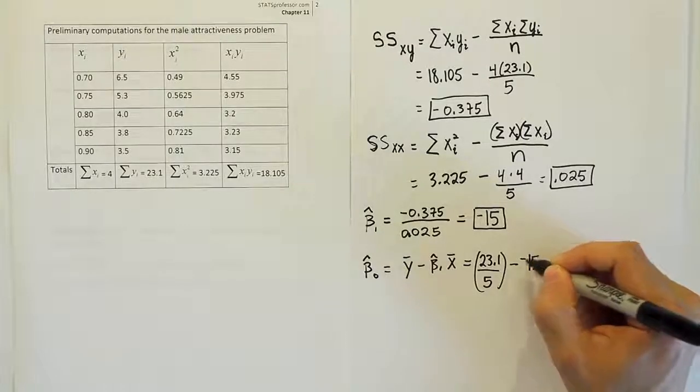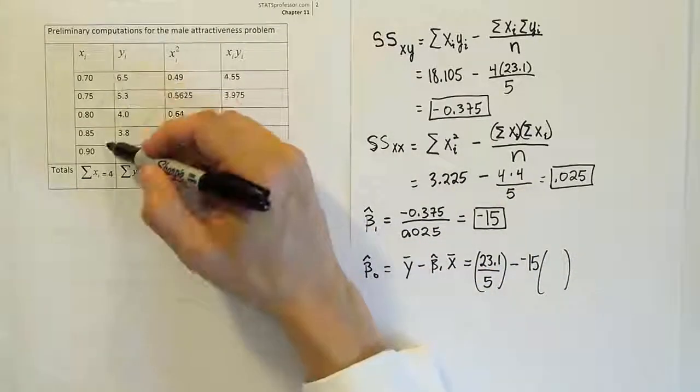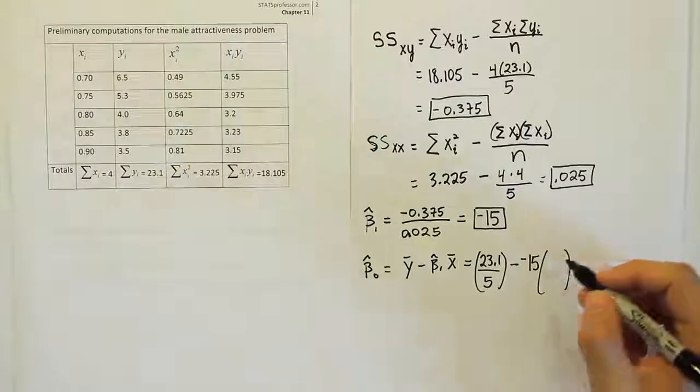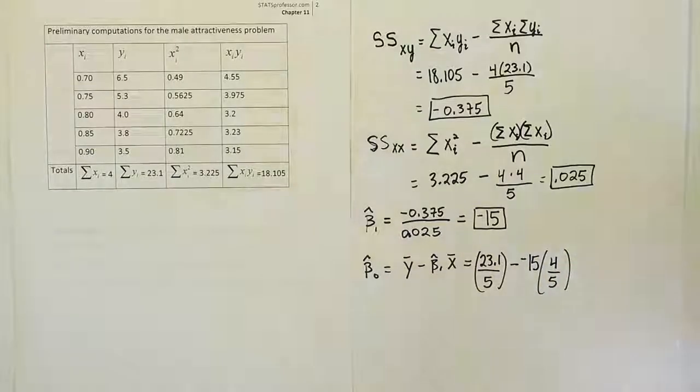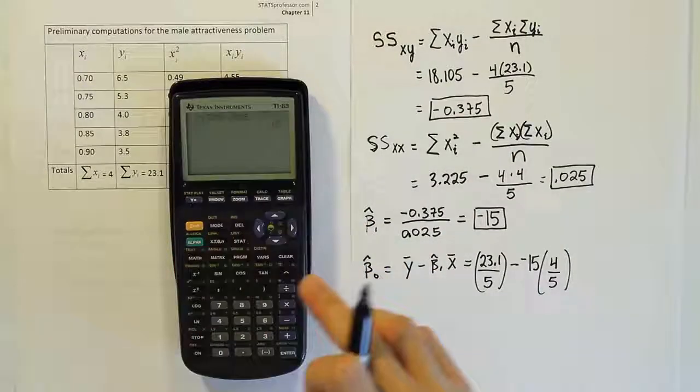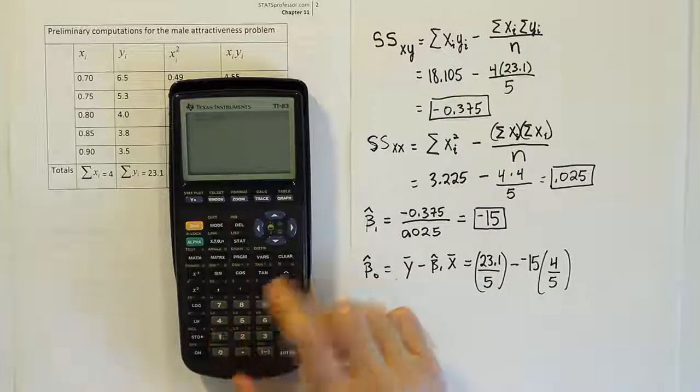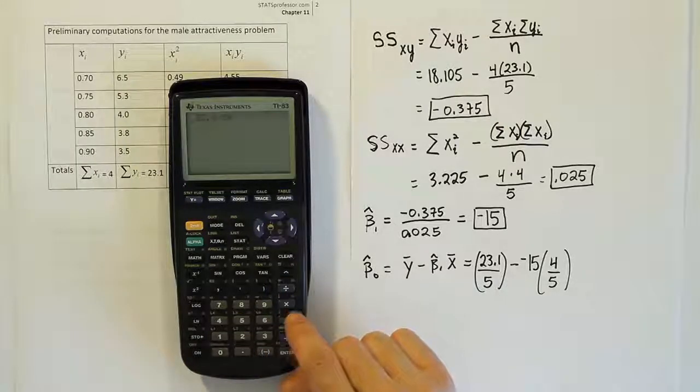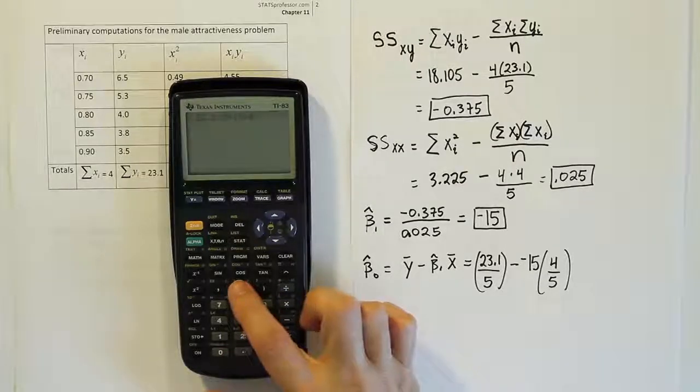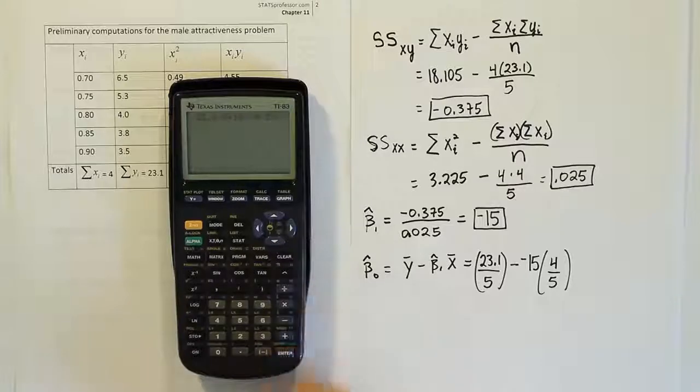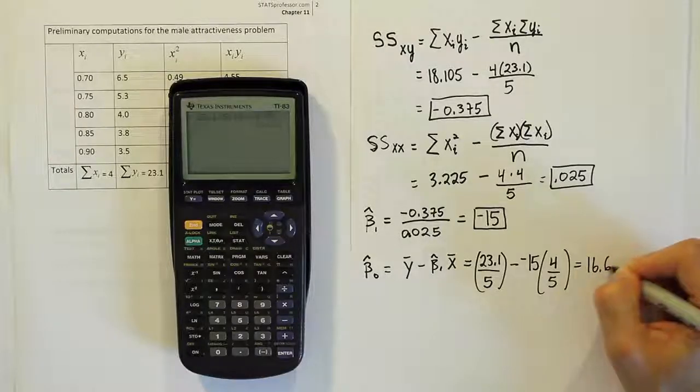Then times your x-bar. Add up all the x's, divide by the number of values. The sum is 4 divided by 5, so we get 0.8. Let's work this out in our calculator. We're going to have 23.1 divided by 5, minus minus will become a plus, so plus 15 times 4 fifths or 0.8. I'm just going to put it as 4 fifths. And when we're done we get 16.62. So basically 16.62.